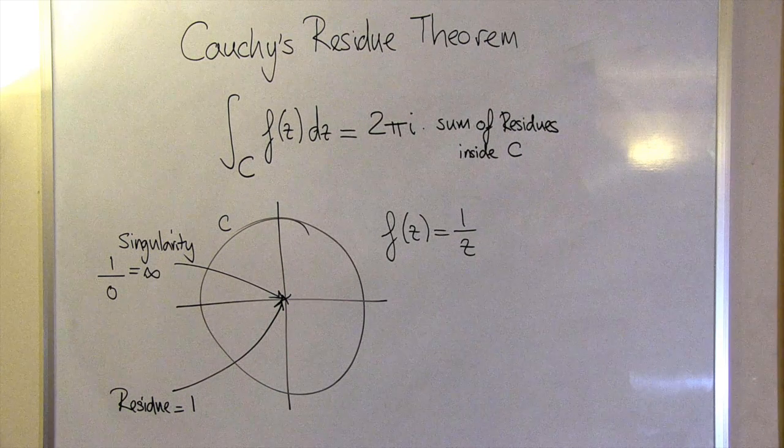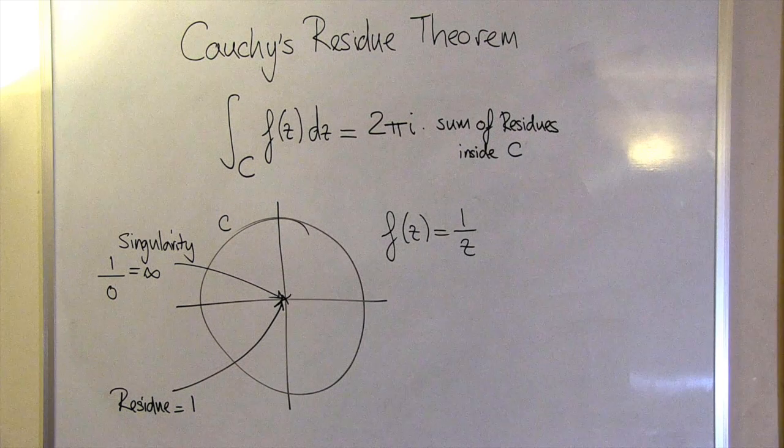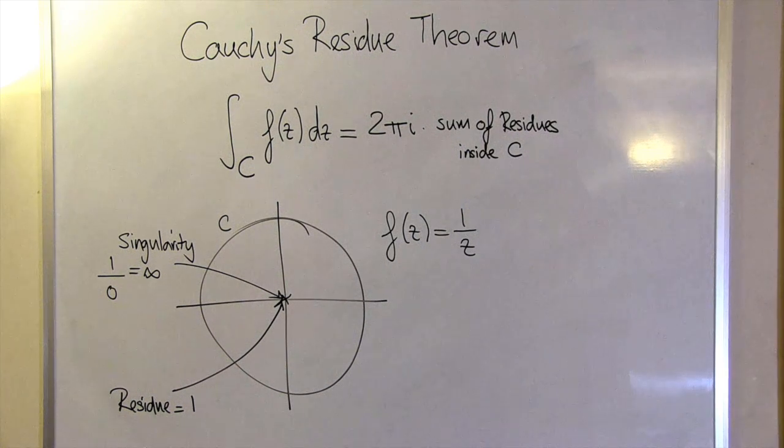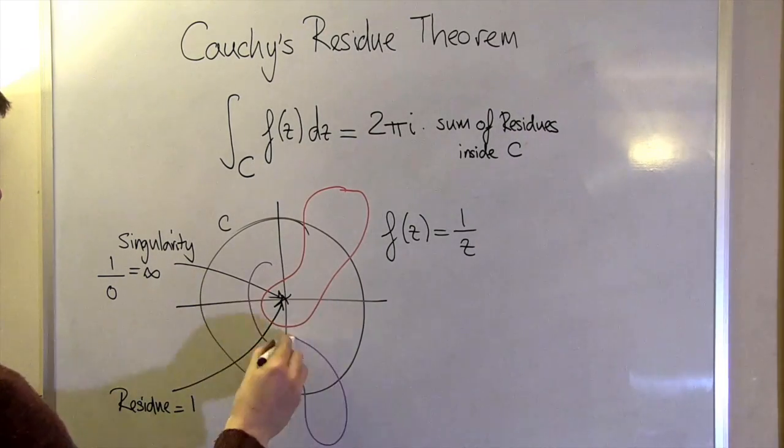But notice that the theorem doesn't actually say that the contour has to be a circle—it can be any shape as long as it contains the same singularities. So according to the theorem, the value of the integral along any of these contours is just the same: 2 times pi times i.